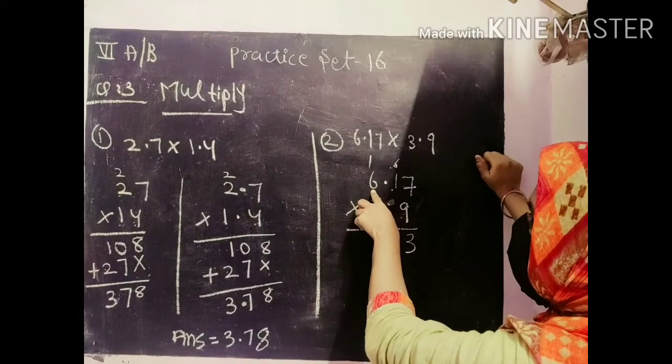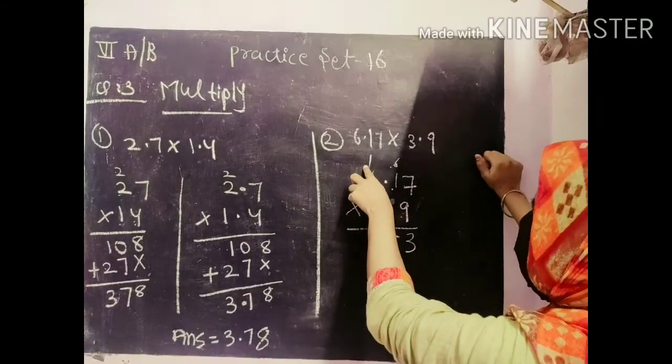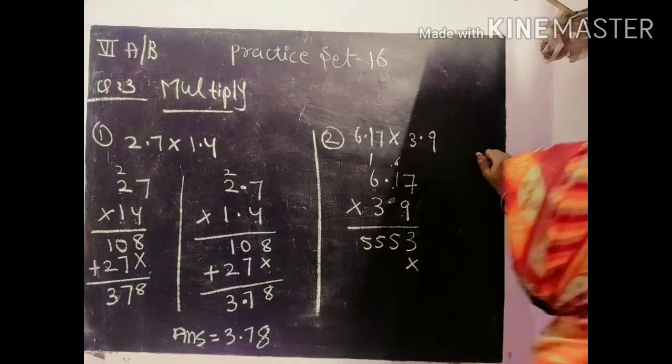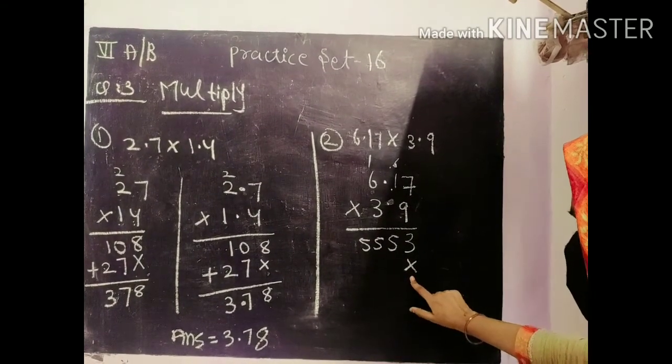9, 6's are 54. 54 plus 1, 55. Then we will put the sign of multiply.